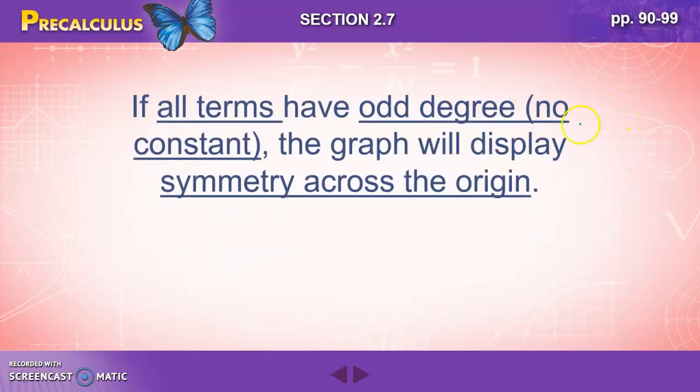Your graph is going to be symmetric across the y-axis. So this half will look like this half. If all your terms have an odd degree, x to the fifth, x to the third, x with no constant, the graph will display symmetry across the origin. Here's our origin right here. And this is a little bit harder for people to visualize. But let's say that this is your function. Imagine what that would look like over here. Maybe something like that. Symmetry across the origin.